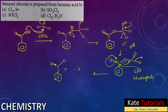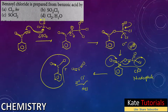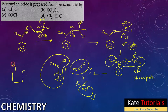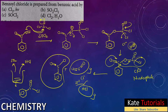The Cl⁻ came in and the -O-S(=O)Cl left. The Cl⁻ and the initial H⁺ combine to form HCl. So the products are: benzoyl chloride, SO₂ (gas), and HCl (gas). Since SO₂ and HCl are both gases, they escape from the beaker, and we get pure benzoyl chloride remaining.